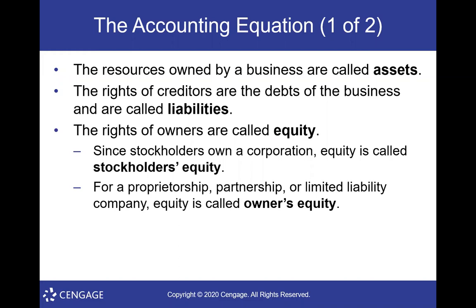Liabilities are things that you owe — debts. If I owe money to someone else, that's a liability. There's more than one type; they either come from directly borrowing money, or in a business arrangement where a supplier delivers goods and says you can pay in 30 days. Also, if employees work for you and you haven't yet paid them, you owe them — that's a liability. Assets are what we own and liabilities are what we owe.